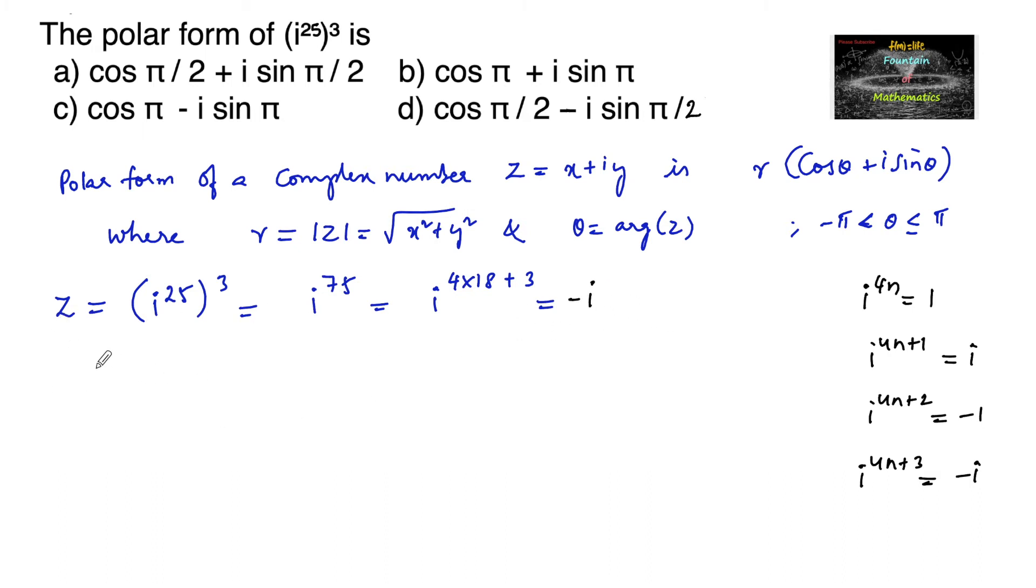So complex number z is equal to minus i, and then mod z is equal to modulus of minus i, which is equal to root of 0 plus minus 1 whole square, which is root 1 and 1. Mod z is always positive.